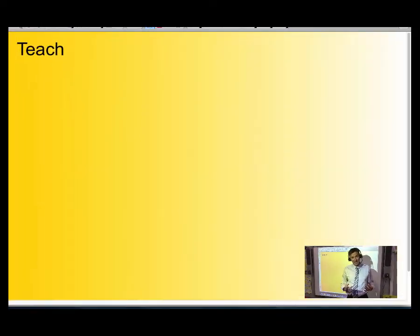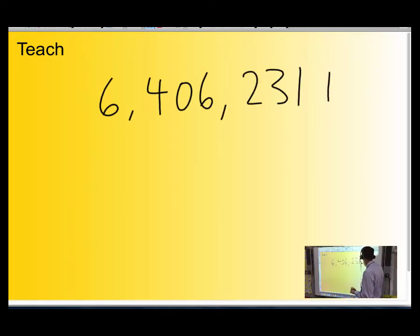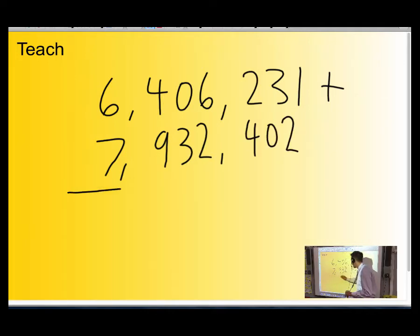Right, we're in the teaching phase here, so I'm just going to show you how to do it. I'm going to write out two big long numbers: 6,406,231 plus 7,932,402. And now I'm going to add those numbers together. There will be some carrying—there is some carrying, thank goodness. Okay, let's have a go.